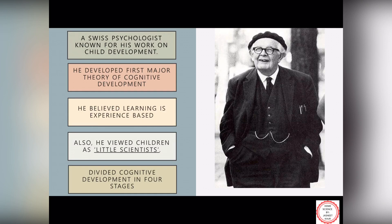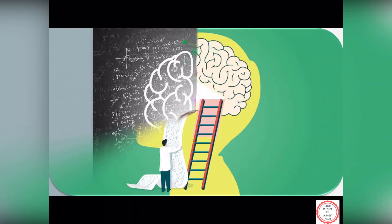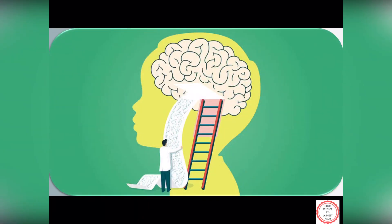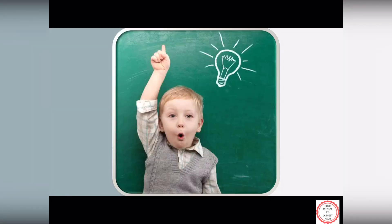He worked in the field of child development. His theory of cognitive development suggested that intelligence changes as children grow. A child not only acquires knowledge from his existing environment but also develops views or perceptions of his surroundings.